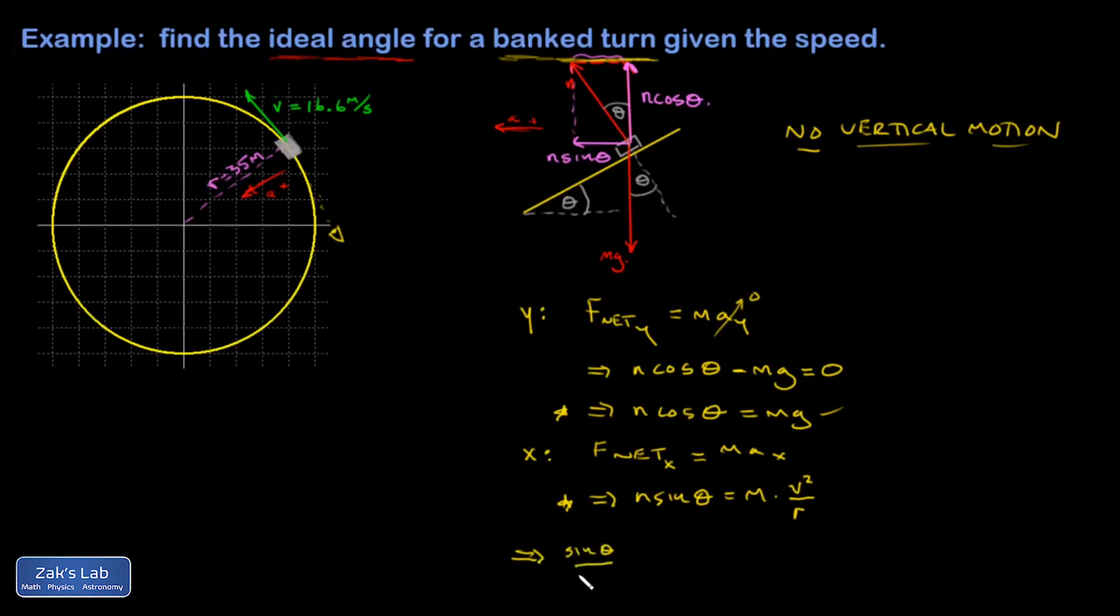So I have sine theta over cosine theta on the left-hand side. And then on the right-hand side, I take this piece and divide by this piece. That just puts a g in the denominator here, and the m's cancel. So I get v squared over gr. So that's tangent of theta.